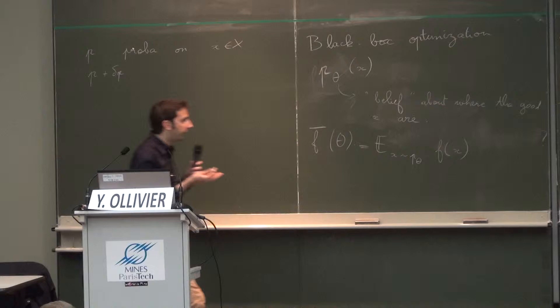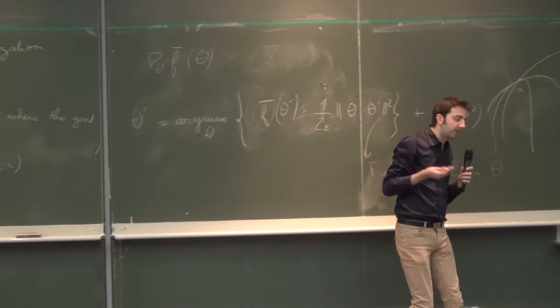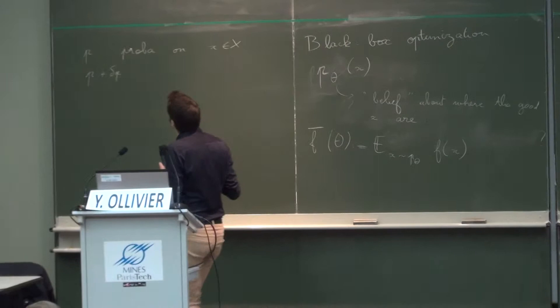We are going to do a gradient descent, or estimate a gradient descent, so we are going to have small steps and we can assume that the distributions are close to each other.